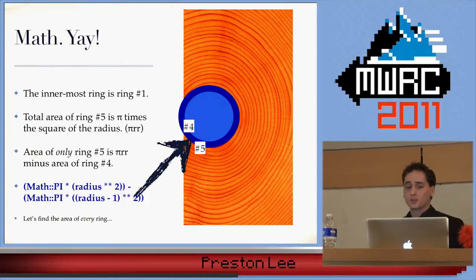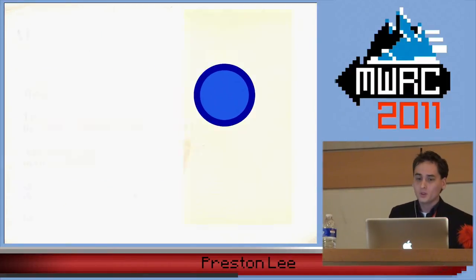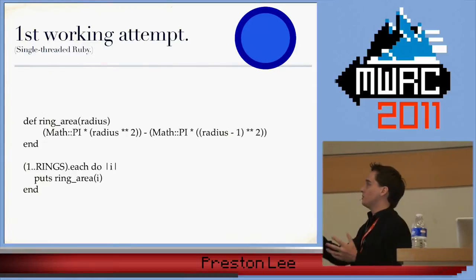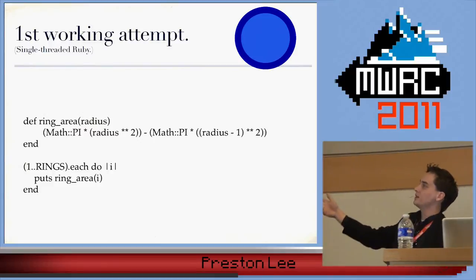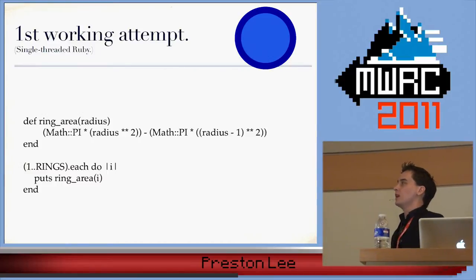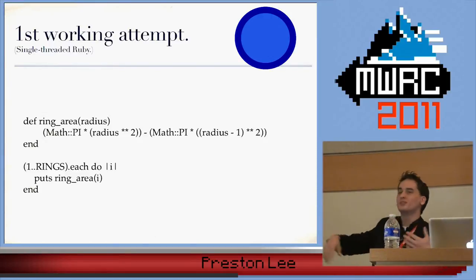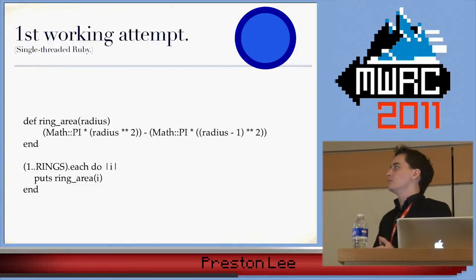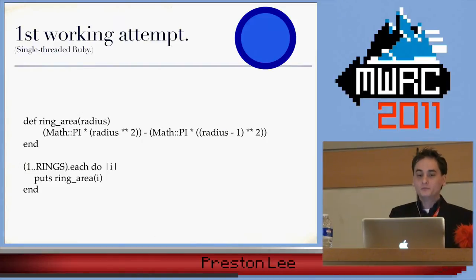We're interested in finding the area of a very old tree as fast as possible. Our first attempt is very simple — we have our basic formula. A simple function that, given the radius, returns the area of just that single ring. This is not recursive, it's just floating point arithmetic that returns a raw float value. For a given number of rings, we just put that in a simple for loop, print it to the console, and we're done. No special libraries needed — just Ruby by itself.